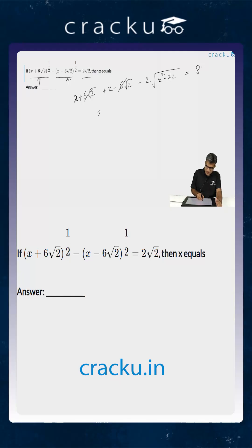So you are essentially going to get that 2x minus 2 times square root of x square minus 72 is equal to 8, or x minus square root of x square minus 72 is equal to 4.